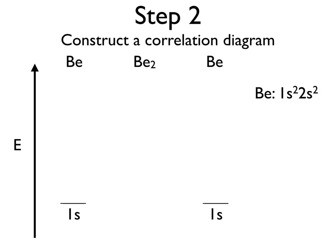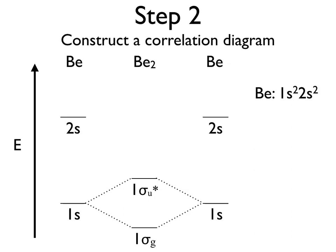If electrons from these two atomic orbitals combine to form a bonding molecular orbital called 1 sigma g, that will lower the energy of the system and foster the creation of a molecule. However, once that molecular orbital is filled up, electrons can go into an anti-bonding 1 sigma u* molecular orbital, which will destabilize the bond. We can do the same thing with our 2s atomic orbitals, which combine to form the 2 sigma g bonding molecular orbital and the 2 sigma u* anti-bonding molecular orbital.